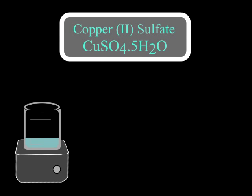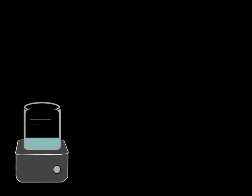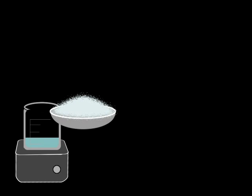Copper sulfate exists as a pentahydrate, so 90 grams of the copper sulfate is water, so to figure out yield we need to take that into account. Next we take the sample of sodium carbonate and slowly add it to the copper sulfate solution. The copper carbonate salt that follows will completely precipitate out of solution, as copper carbonate is completely insoluble in water.